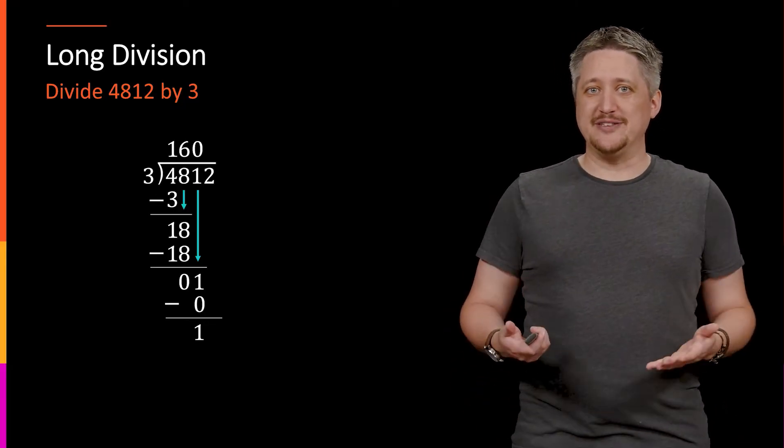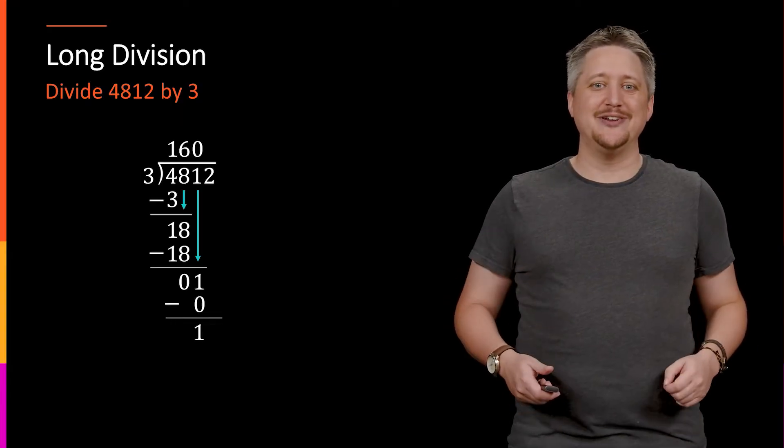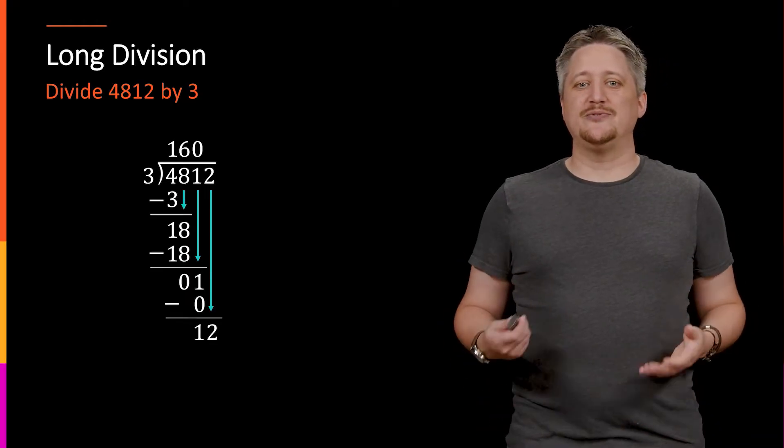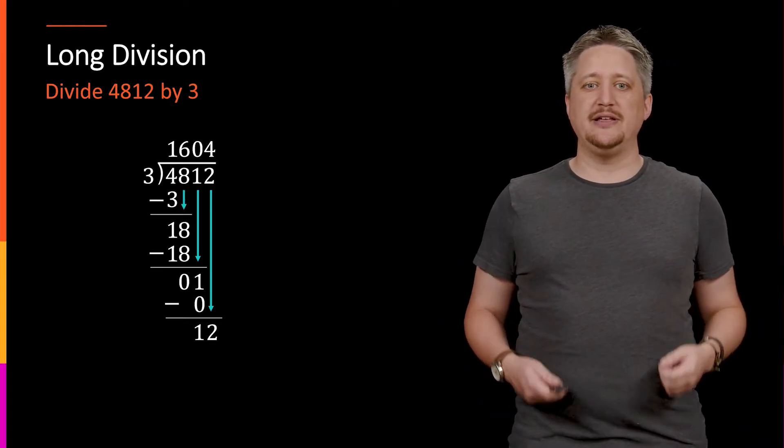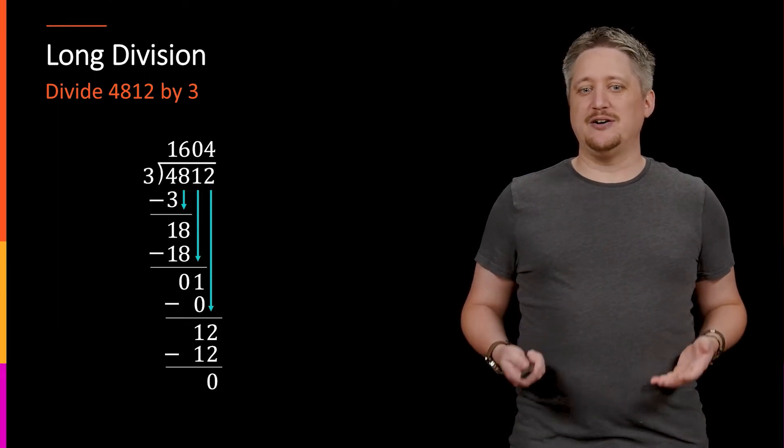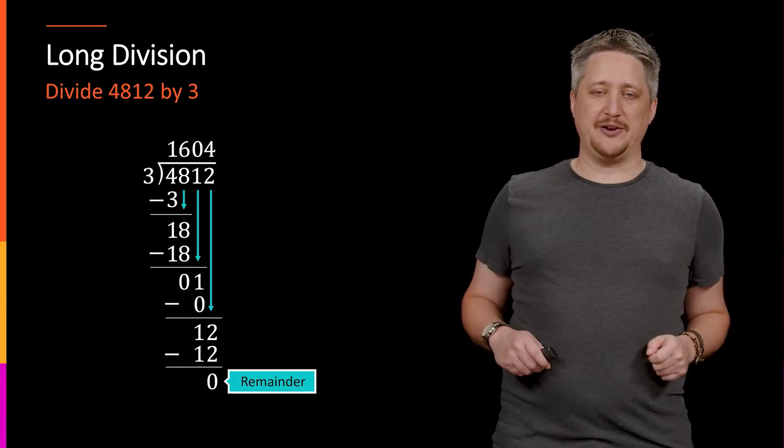Again, I know usually you probably skip this in your head or if you're doing this out, but with polynomials, this is actually going to matter, which is why I'm making this point. Last but not least, drop the two. I now have 12. 12 divided by three, that gets me four, which I subtract the four times three is 12. I get zero. Zero is my remainder. Okay.